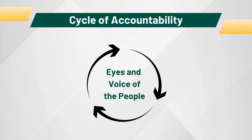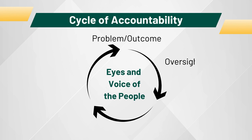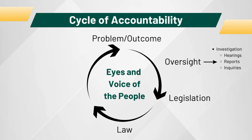In serving as the eyes and voice of the people, lawmakers engaged in oversight operate in a cycle of accountability that begins with recognizing a problem to be solved, conducting some kind of investigation — perhaps with hearings, reports, or letters of inquiry — to executive agencies or private entities. Findings from the investigation should inform policies proposed in legislation, which at some point becomes law. Usually, agencies issue regulations authorized by the new statute, with lawmakers using their oversight powers to oversee and add input. Executive agencies implement regulations and may issue contracts to private partners. Ultimately, there are good, bad, and indifferent outcomes where lawmakers, as the eyes and voice of the people, must follow up.